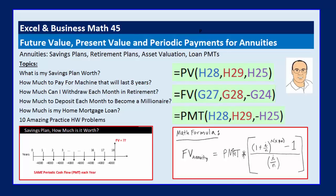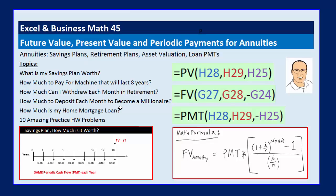We will learn the math in this video, but we'll also see that behind the scenes, the PV, FV, and PMT functions are all programmed to do the heavy lifting math for us. Savings plan, retirement plan, home mortgage loan — these are all typical consumer financial products, and all of these usually fit the pattern of an annuity.